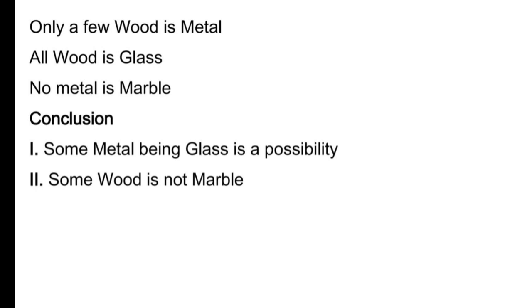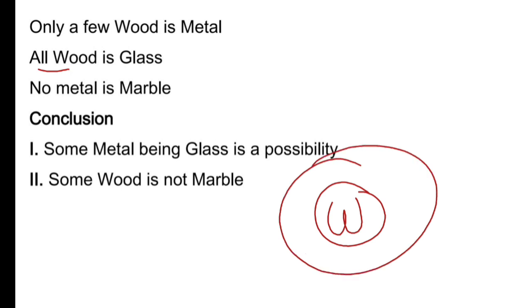So the first question here is: 'only a few wood is metal.' Session start karne se pehle hum samjha denge — hum syllogism ko Venn diagram ke through solve karte hain. Kuch particular words ke liye kuch particular diagrams banaate hain. Sabse pehle baat karte hain 'all' ke baare mein. Jab bhi 'all wood is glass' likha ho, toh wood ko andar rakhate hain, glass ko bahar — pura ka pura wood glass ke andar aa jaata hai. Yeh hota hai 'all' ka diagram.